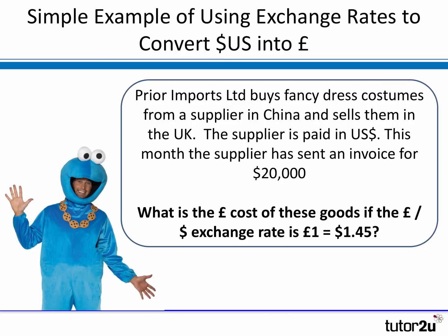Here we've got an example of a business in the UK called Prior Imports. Its business is buying fancy dress costumes from a supplier in China and selling them into the UK market. The supplier invoices the UK business, Prior Imports, in US dollars. This month, the supplier has sent an invoice for $20,000 worth of fancy dress costumes. Prior Imports now needs to pay that invoice — it needs to pay $20,000. But what is the pound cost of those goods?